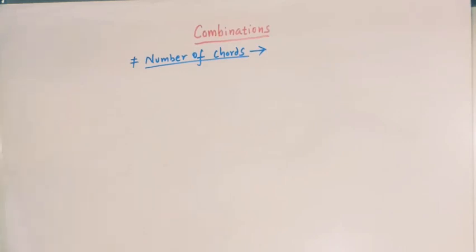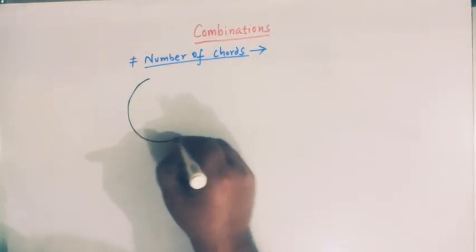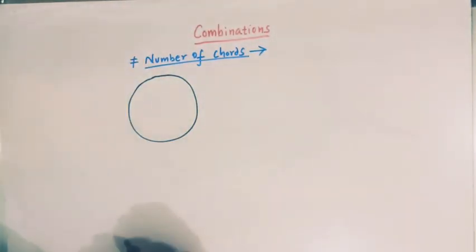Hello viewers, in today's class we are going to take up one important problem from permutations and combinations. The problem we are going to take up is to find the total number of chords which can be drawn in a circle when the number of points on the circumference of the circle are given to us. So let us take a circle.